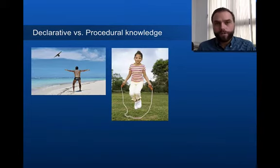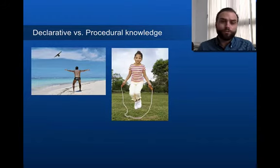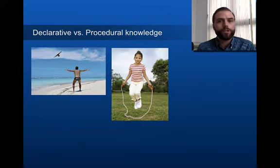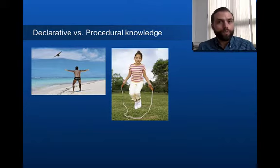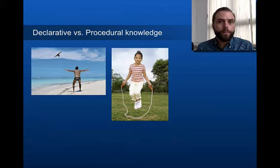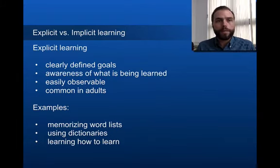Here's a visual example: a bird is flying and a man is trying to fly. The bird has procedural knowledge but probably can't explain the physics of how it flies, while the man might be able to explain it but doesn't have the procedural ability. The second example is a child skipping with a jump rope — the child can skip better, but probably can't explain gravity and movement. The child has better procedural knowledge.